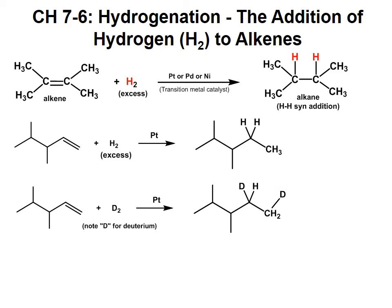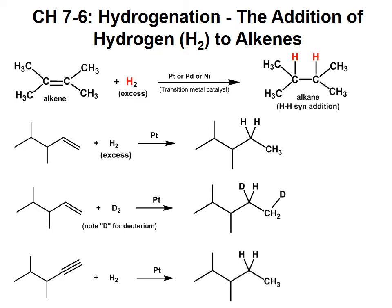This reaction is not limited just to alkenes; it will also work with alkynes. Here we have a carbon-carbon triple bond. On this carbon there are no hydrogens; on this carbon there is one hydrogen. Remember that there are two pi bonds here, so instead of adding one mole of H2, we're going to add two moles. We're going to add a total of four atoms of hydrogen, and the result is the same — we go from an alkyne to an alkane.